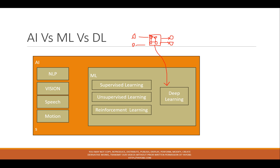We use a neural network with input data, middle (hidden) data, and output data. We process through these layers, and when additional layers are needed, that data processing is called deep learning.